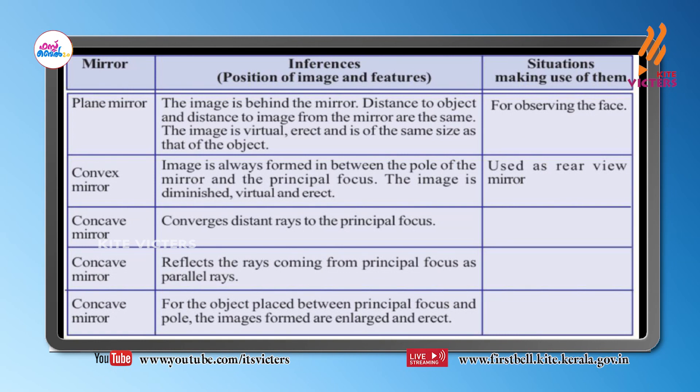In another situation, a concave mirror reflects rays coming from the principal focus as parallel rays. When the object is placed at the principal focus, after reflection the light rays come back parallel. So we can use this feature in the headlamps of vehicles, where the bulb is placed at the focus of the concave mirror to create a parallel beam.